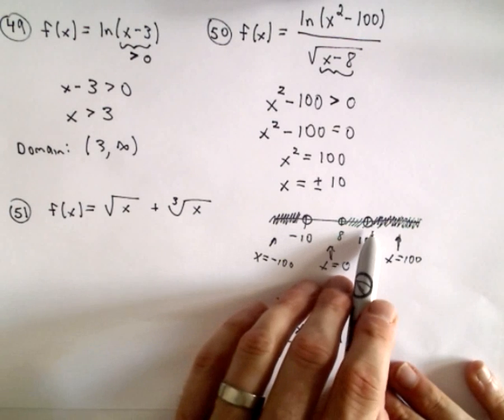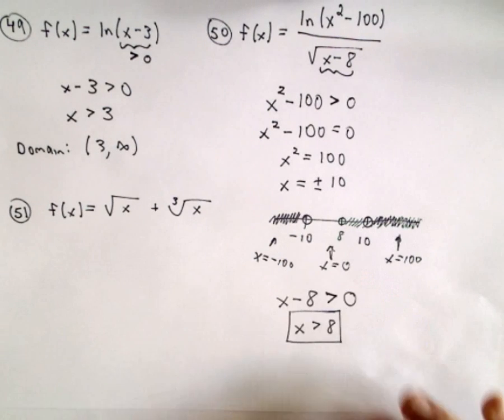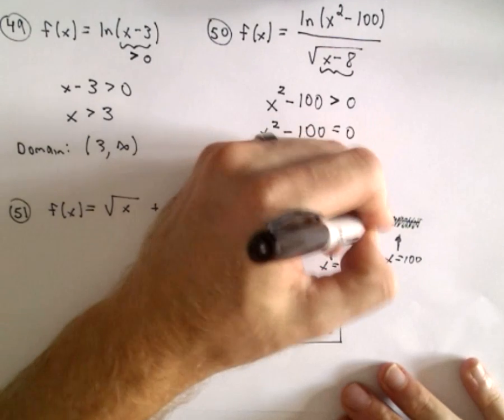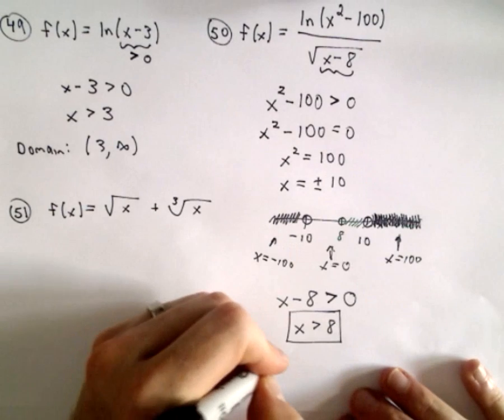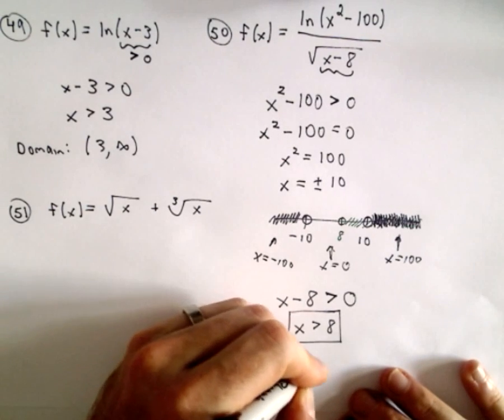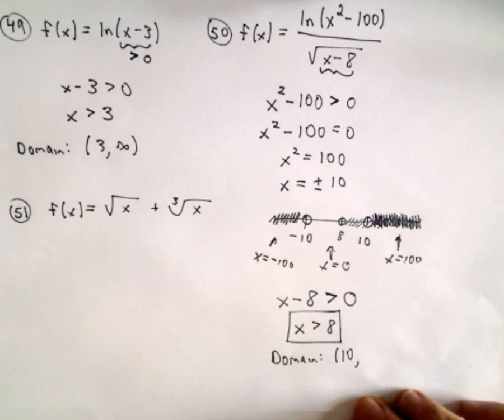So they have to be greater than eight and also in between negative infinity, negative 10, or greater than 10 to infinity. So the only numbers that are going to do that are going to be numbers that are strictly greater than 10. So the domain in this case will be from positive 10 out to infinity.